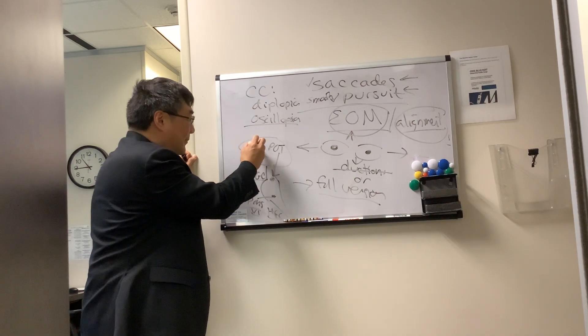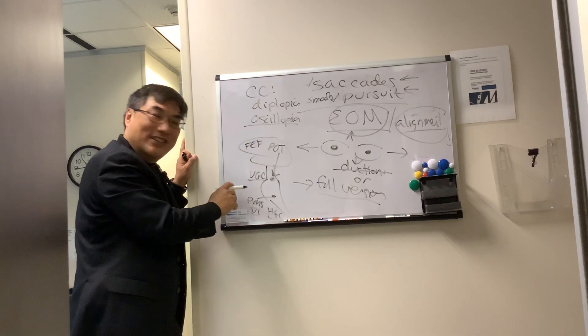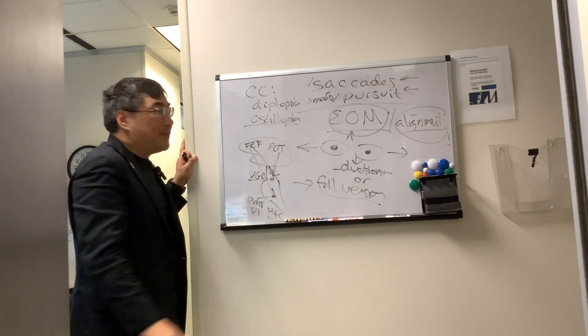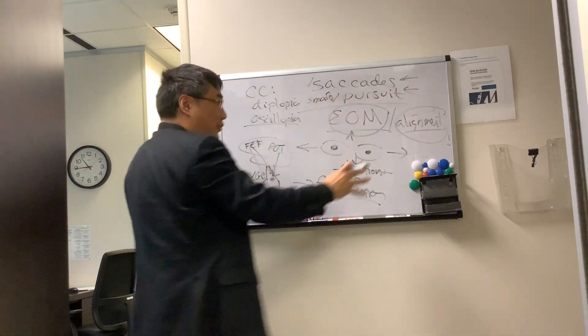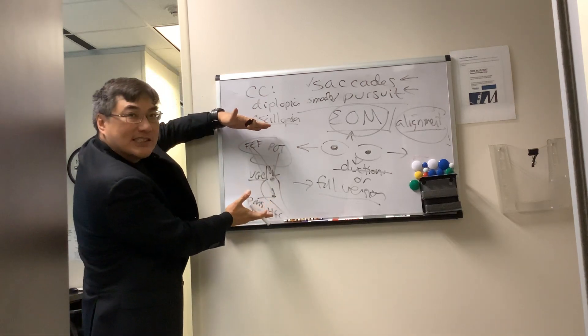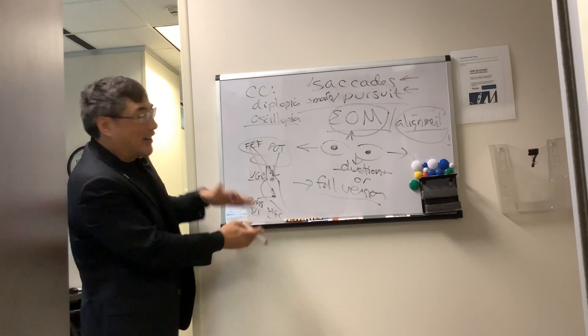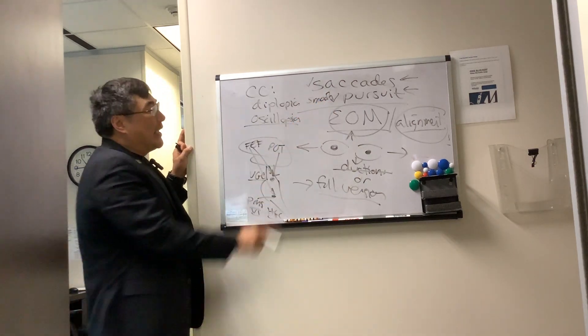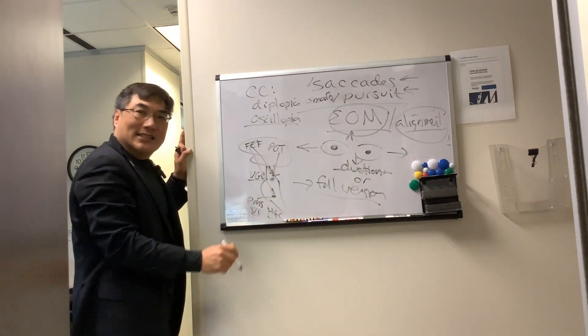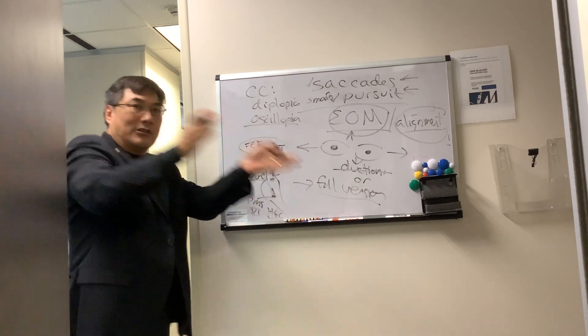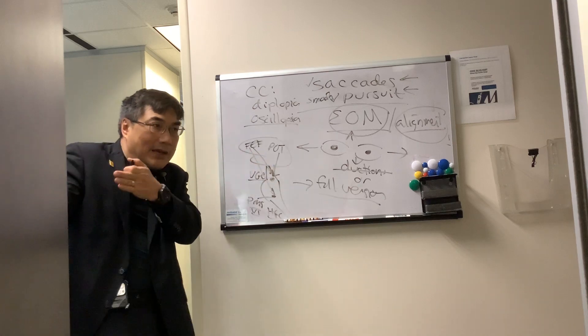And for the saccade, contralateral frontal eye field. So contralateral frontal eye field also has to talk to brainstem nuclei. So what we're looking for in pursuit is actually an assessment of this entire neural network. Anything that damages anywhere along the network can damage your pursuit. And the same thing for saccades. Anything that damages the saccade, which is a fast movement, look at my nose, look at my pen, look at my nose, look at my pen.